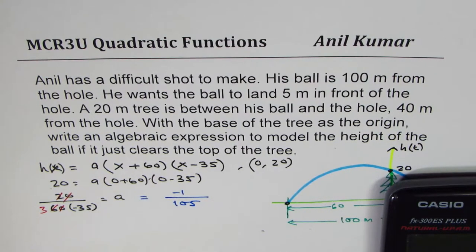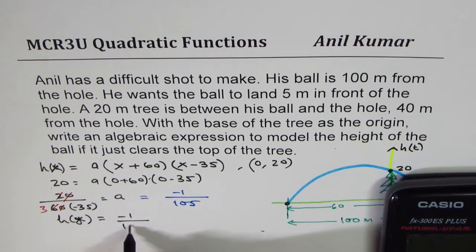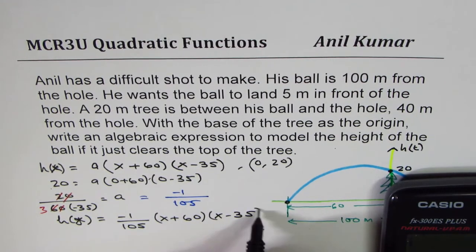So with that, we can write down the equation as h of x or y, sorry, h of x equals to minus 1 over 105 times x plus 60 times x minus 35.